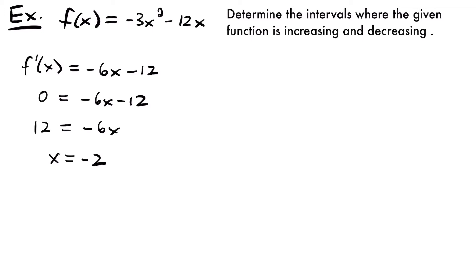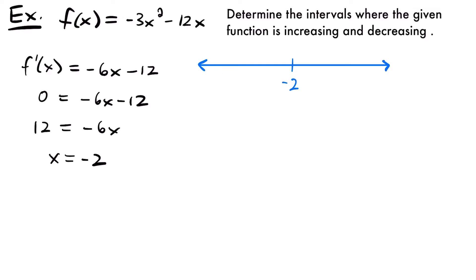To analyze what intervals we're interested in, I'm going to draw a number line — you can also think of it as the x-axis. Labeling our critical value of negative 2, all values to the left are less than negative 2 and all values to the right are greater than negative 2. That gives us two intervals: negative infinity to negative 2, and negative 2 to infinity.